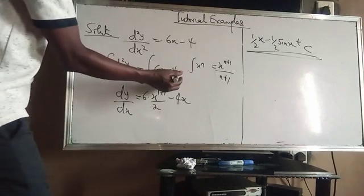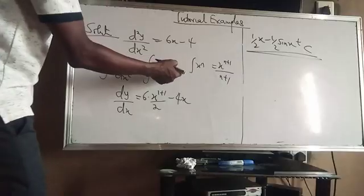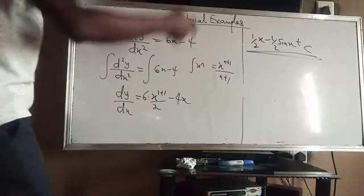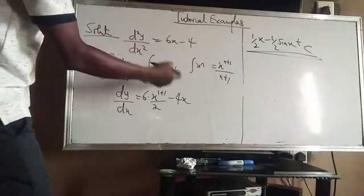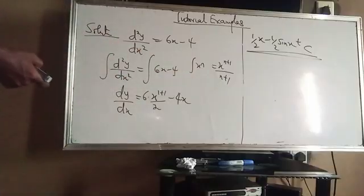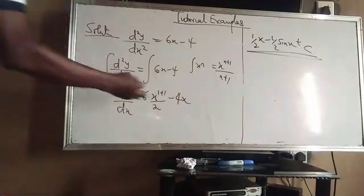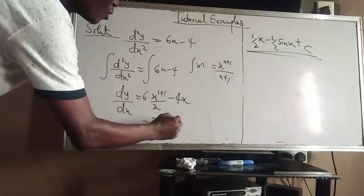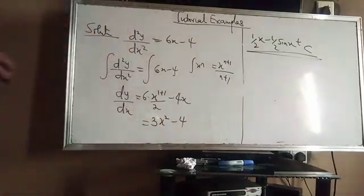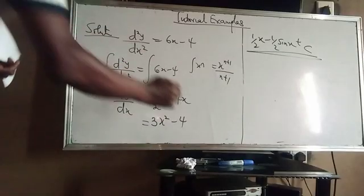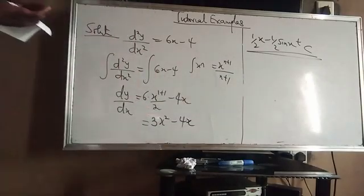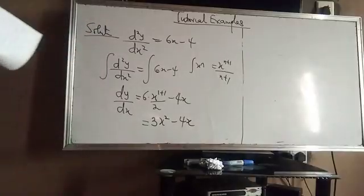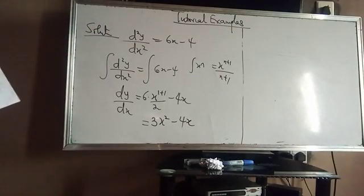4 is a constant, and when integrating a constant you add x to it, so it becomes 4x. Therefore dy/dx = 3x² − 4x, plus a constant c. Don't forget to add the constant of integration.